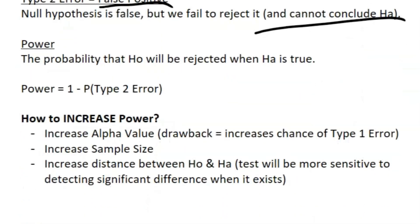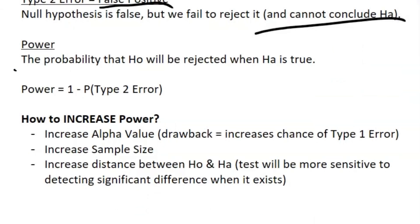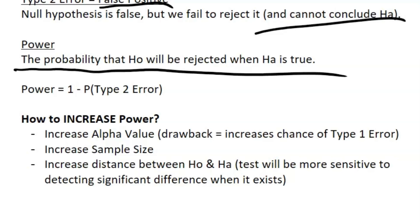Power is the probability that the null hypothesis will be rejected when the alternative is true — the chance of making the right decision when H₀ is false. The equation for power is one minus the probability of making a Type II error. To increase power there are three main ways: increase the alpha value (though that also increases Type I error), increase the sample size, or increase the distance between your null and alternative hypothesis values.